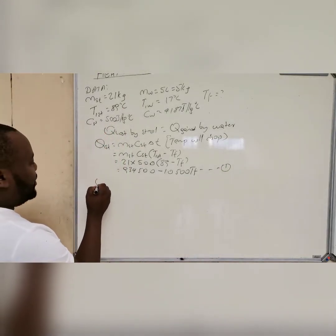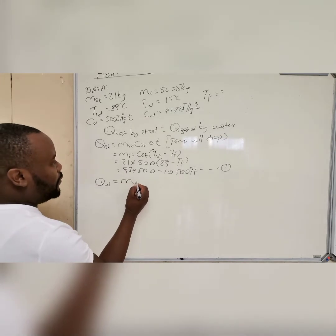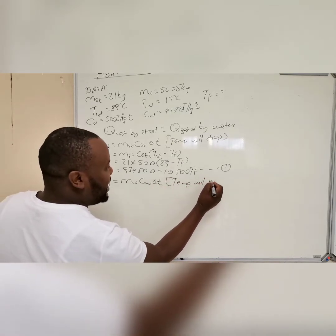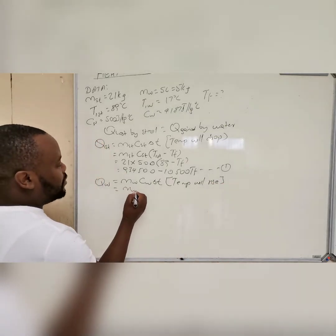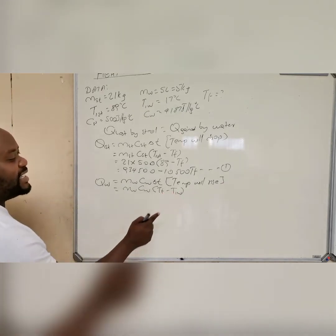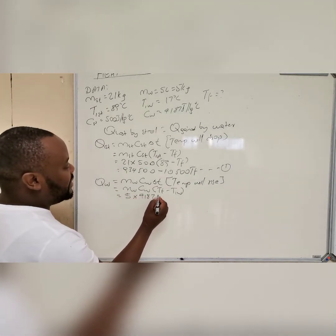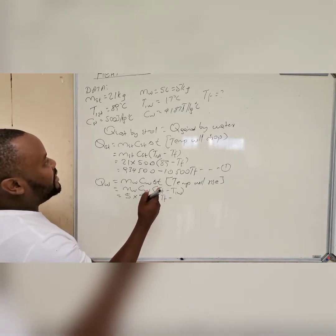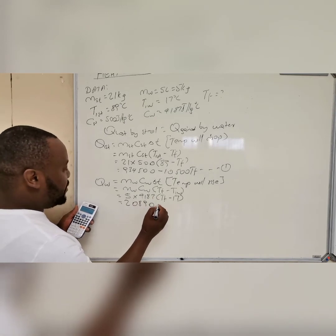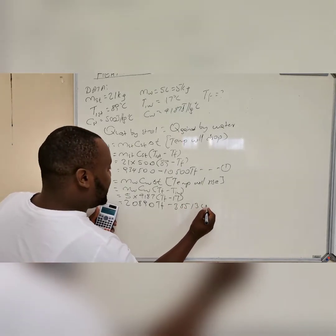For the heat gained by water: mass of water × specific heat capacity of water × change in temperature. Since the water temperature will rise, the final temperature is greater than the initial, so you write (Tf minus initial). That gives: 5 × 4187 × (Tf minus 15), which equals 20,935 Tf minus 313,050. This is equation number two.